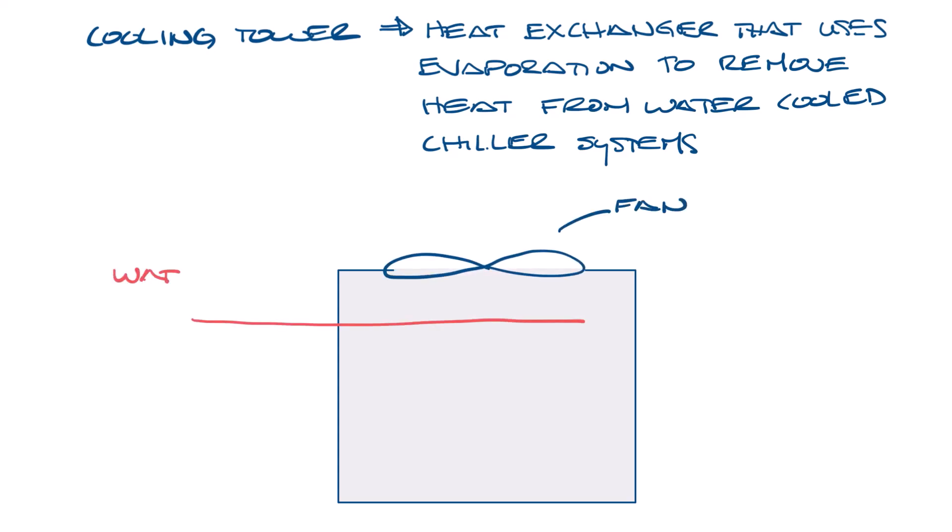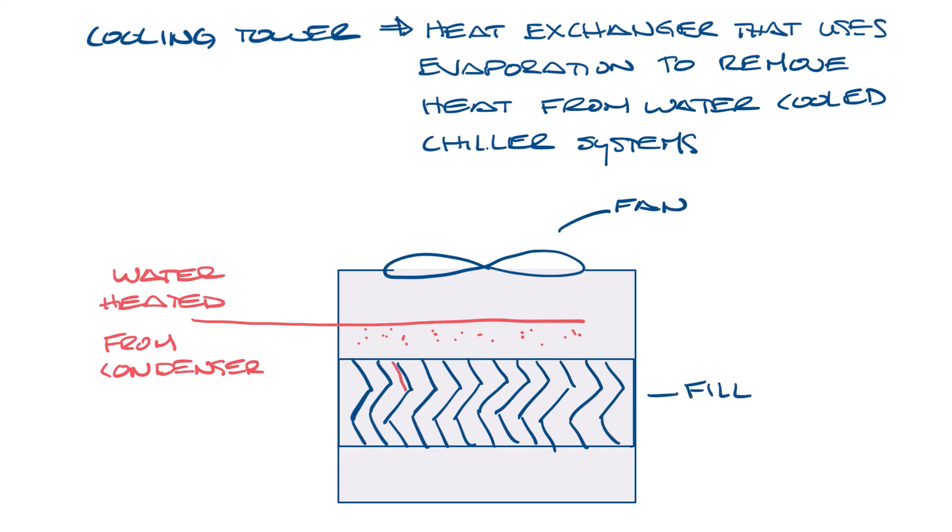Water which has been heated by the condenser is pumped into the cooling tower and distributed onto banks of media called fill. Water from above will run down the fill kind of like this, slowing the flow of water through the cooling tower and exposing it as much as possible for maximum air to water contact.